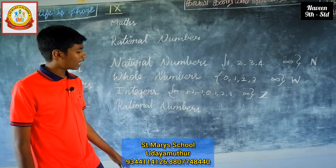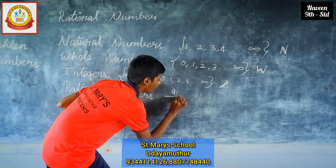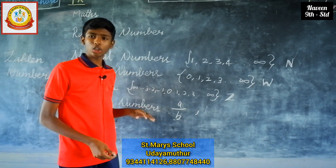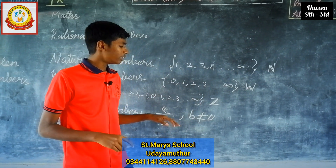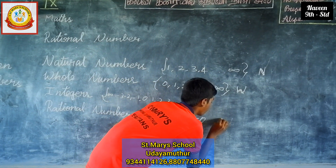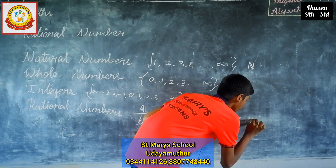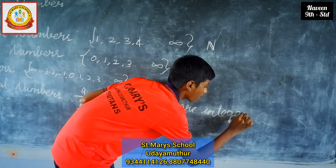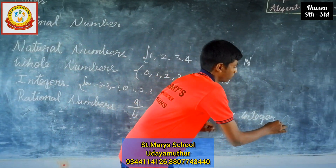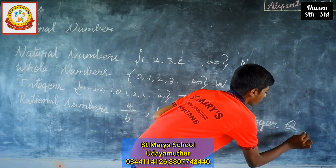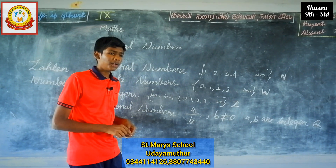Next, rational numbers. Rational numbers can be written in the form of A by B, where B is not equal to 0, and A and B are integers. It is denoted by Q. Why is it denoted by Q? Does anybody know?